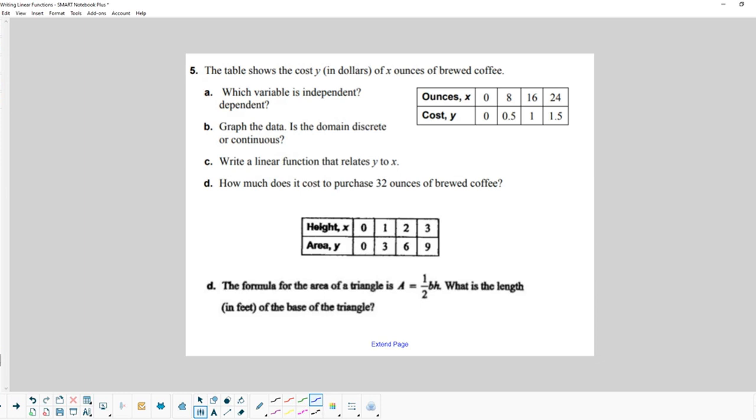Okay, so here's a word problem that we need to take a look at. The table shows the cost y in dollars of x ounces of brewed coffee. So 8 ounces cost 50 cents, 16 ounces cost a dollar, 24 ounces cost a dollar 50. So which variable is independent? Well, we know that the independent variable is x, the number of ounces that you buy. You get to choose that.